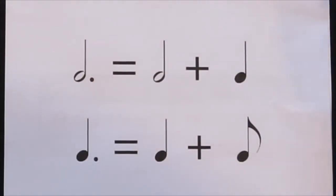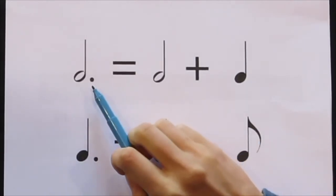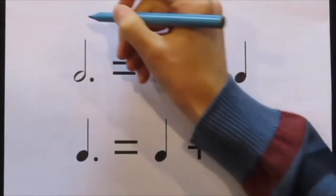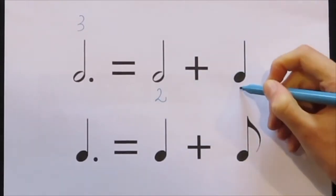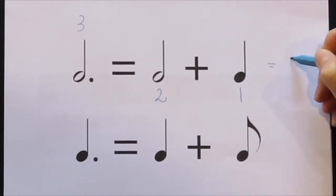For example, if we take this minim, which is 2 beats, and add a dot to it, the new note will have a value that is 3 beats, because we have taken 2 beats and added 1 beat onto it, which equals 3.